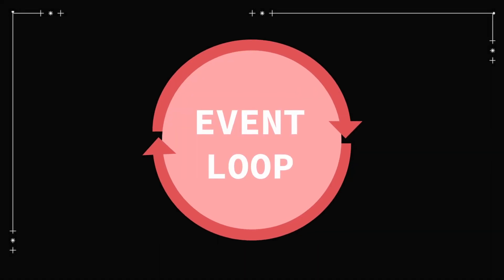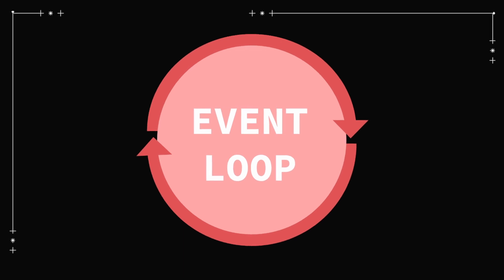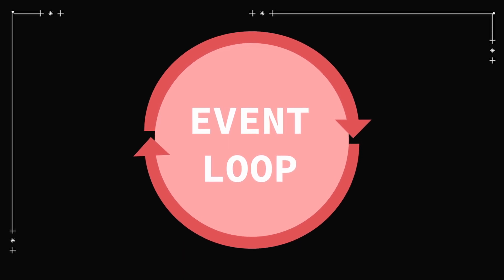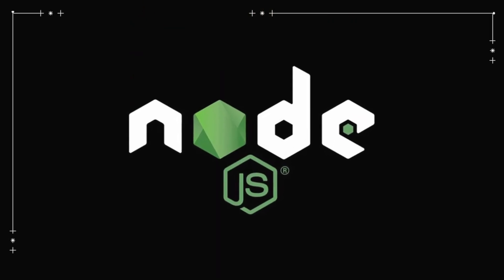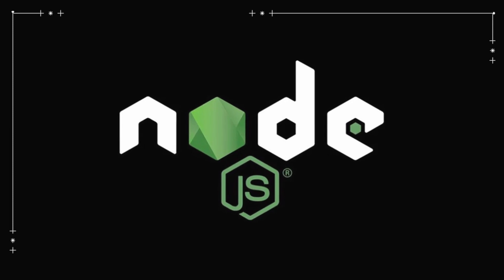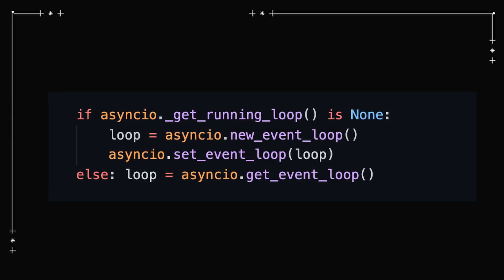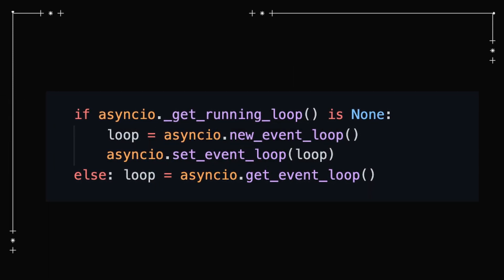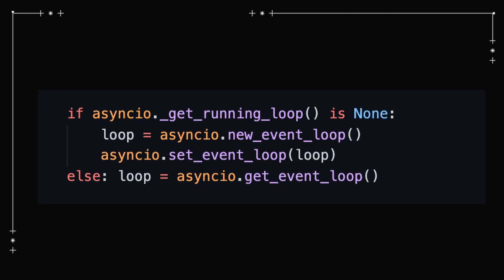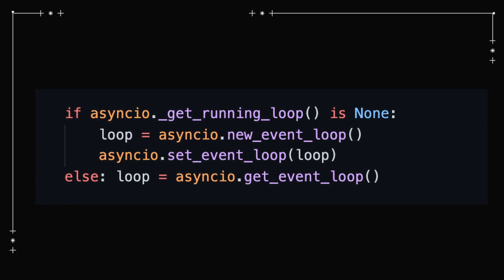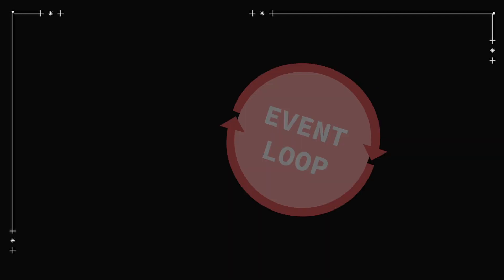Getting back to what an event loop is — it is a fundamental concept in asynchronous programming, and even languages such as Node.js have it constantly running in the background. Unlike Node.js, in Python we have to manually get the event loop. That's why we use the if statement to check if it's running: if it wasn't running, we set a new one; if it was, we just get the current event loop.